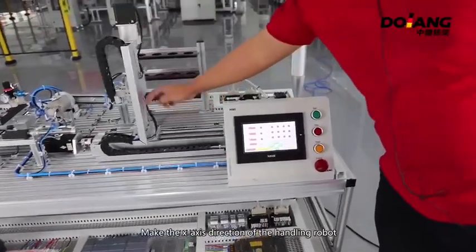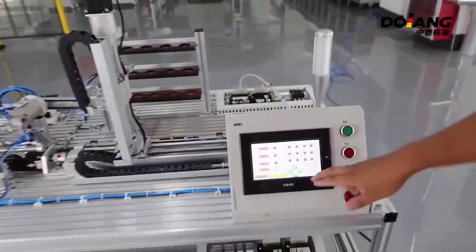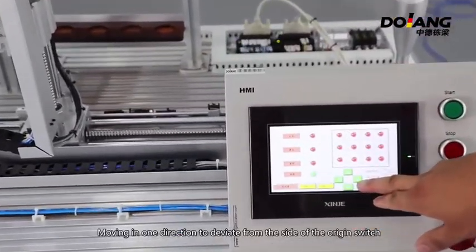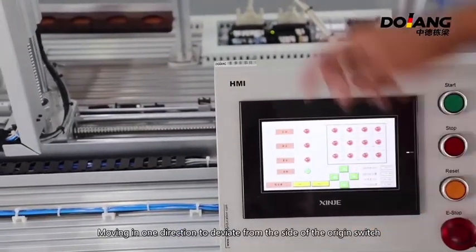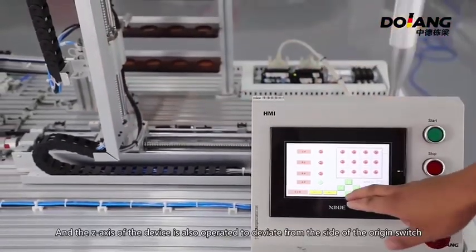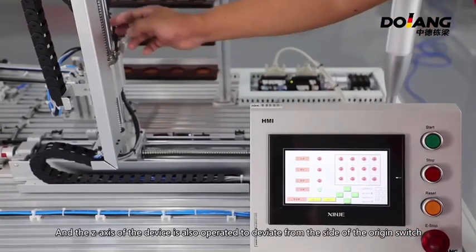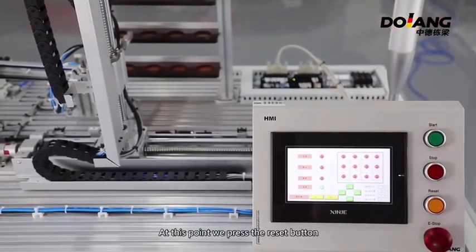Make the X-axis of the handling robot move in one direction to deviate from the side to arranging the switch. And the Z-axis of the device is also operated to deviate from the side of the arranging switch.